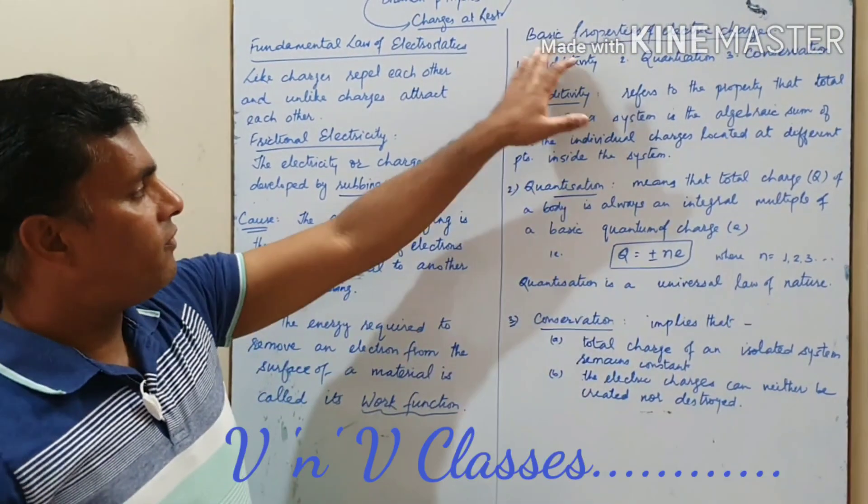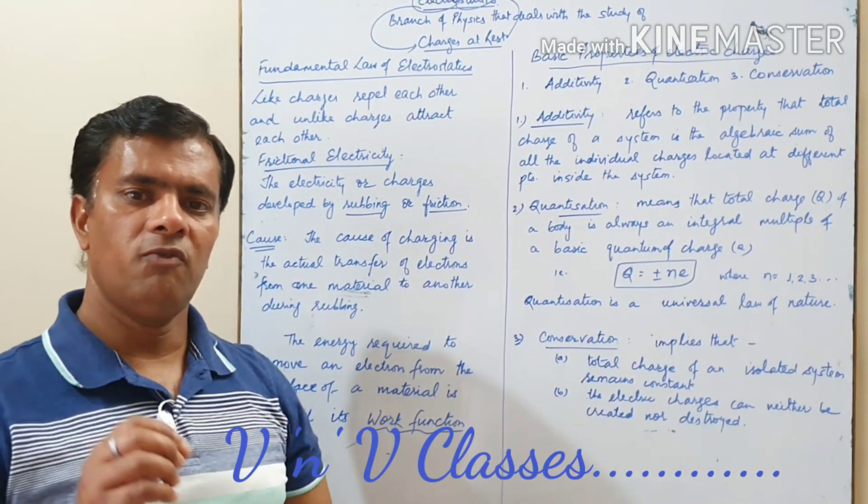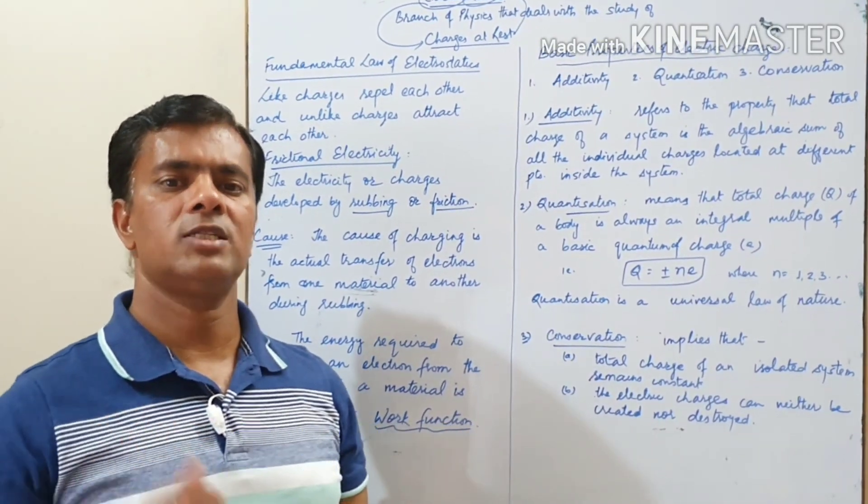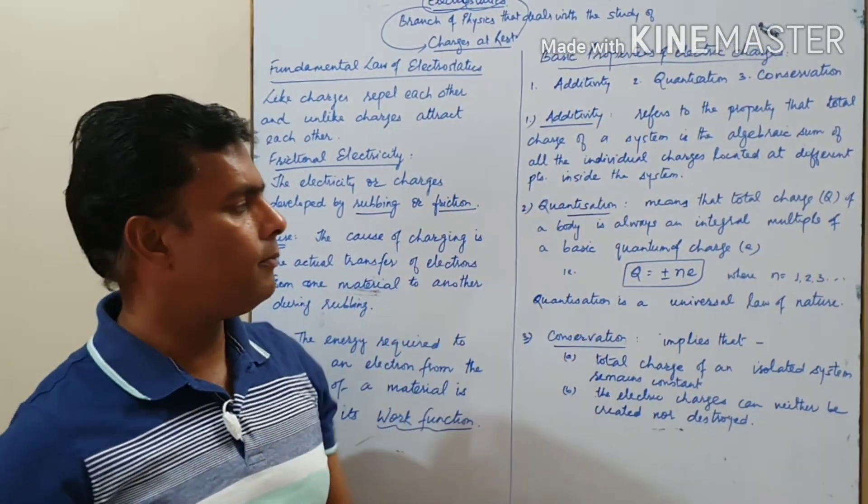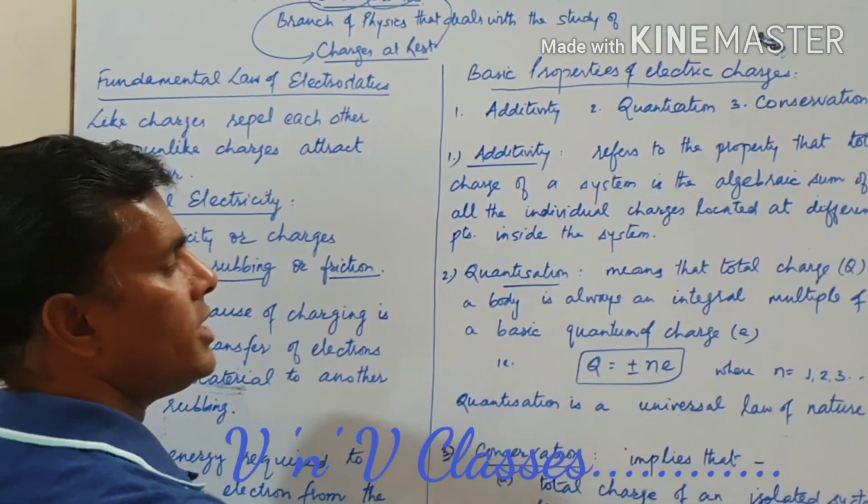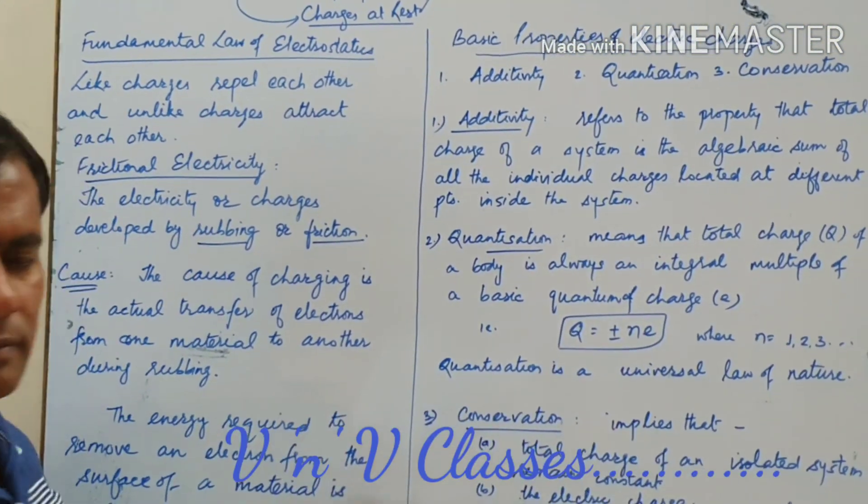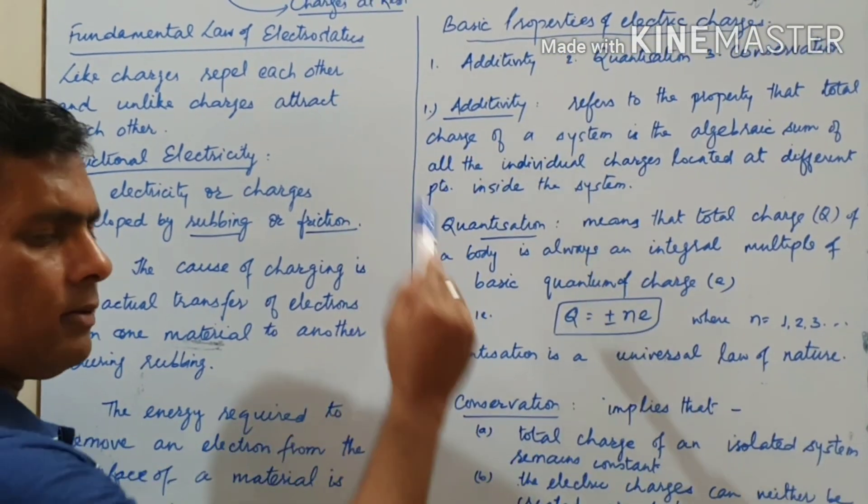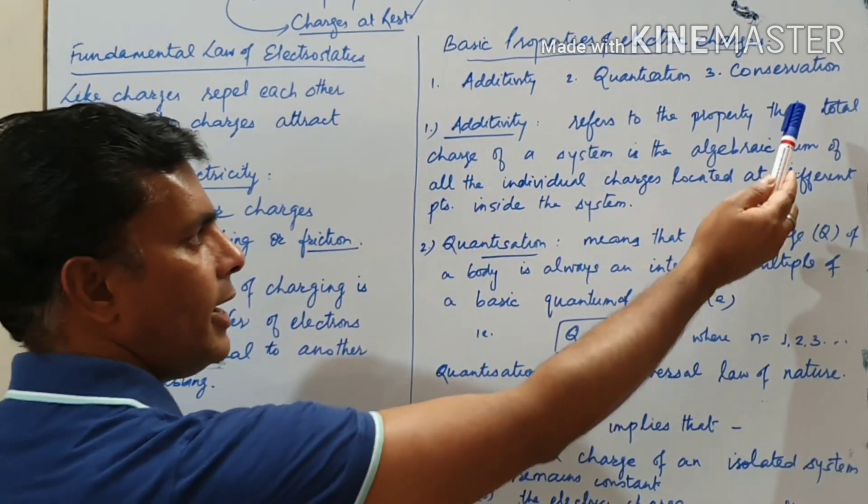Now we further discuss about the very basic properties of electric charges. They are three in number: additivity, quantization, and conservation.